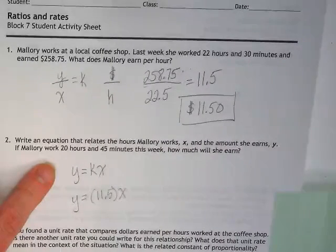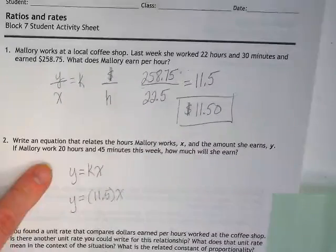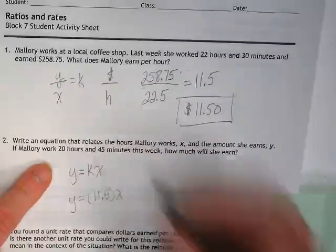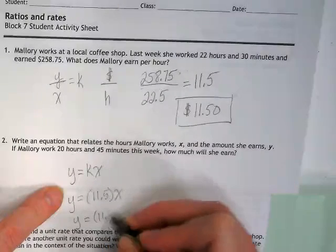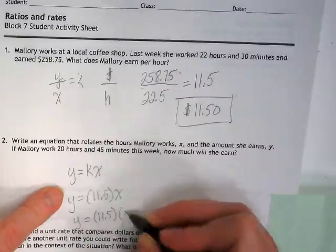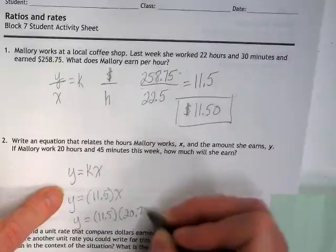Say it again, Preston. Three-fourths. Three-fourths. What is three-fourths as a decimal? So we're going to rewrite this as Y is equal to 11.5 times 20.75.